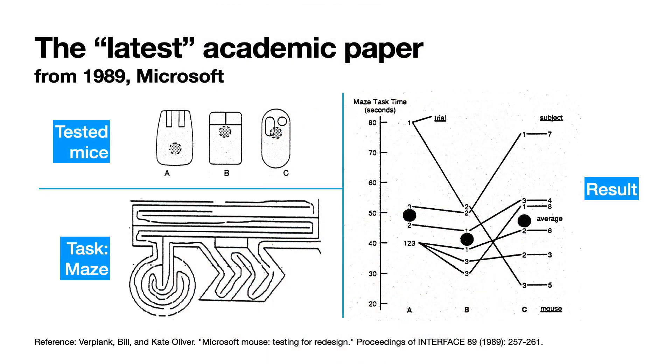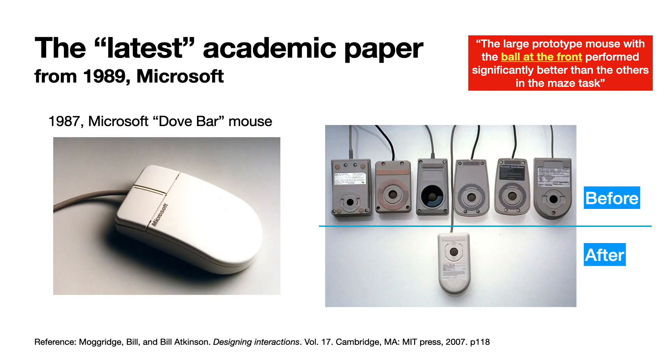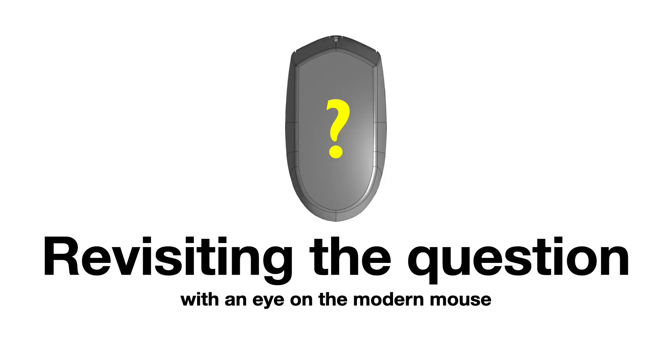Regarding this problem, the latest academic paper we could find is from 1989, which concluded the ball at the front is the best. After this research, Microsoft started to produce a mouse with a ball at the front. Besides that research from 1980s, technologies have been changed a lot, so we decided to tackle this problem again.